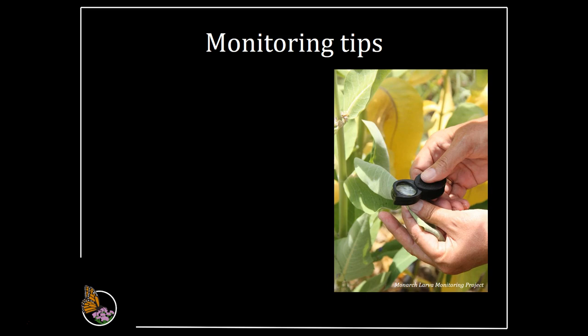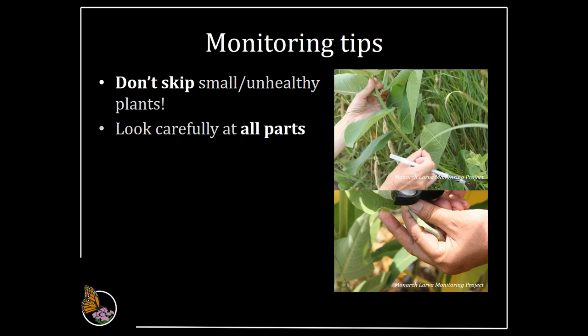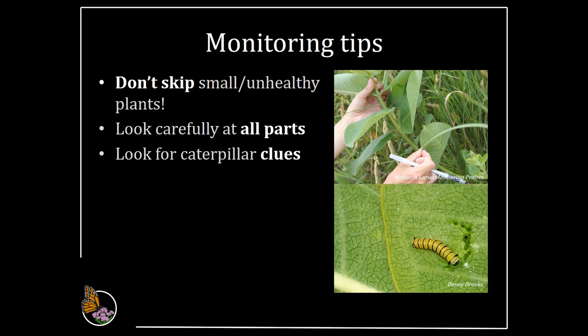Here are some tips to help you locate eggs and larvae. Don't skip plants that appear small or unhealthy — they still have potential to host monarchs. Look carefully at all parts of the plant, including tops and bottoms of leaves, stems, buds, and flowers. Note that some milkweeds may grow many stems while others consist of only one stem. If it's a multi-stemmed plant like butterfly weed, examine the whole plant including all stems and record all monarchs found on that one plant. Look for caterpillar clues such as crescent-shaped chew marks or caterpillar frass. Do not record a monarch if you don't see one — the larvae may have died or left the plant. Handle plants carefully, as larvae can fall off or drop to the ground if the plant is handled vigorously.